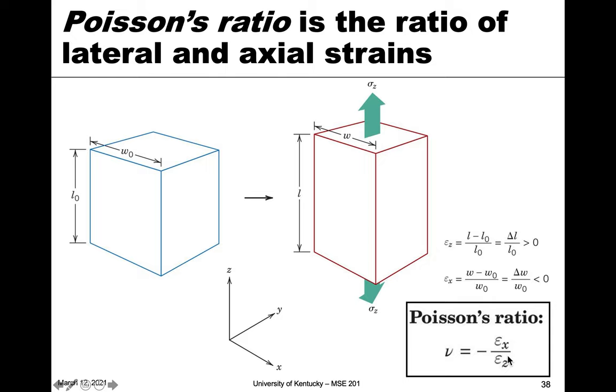Poisson's ratio is a ratio that compares the axial, and by that we mean the tensile axis.